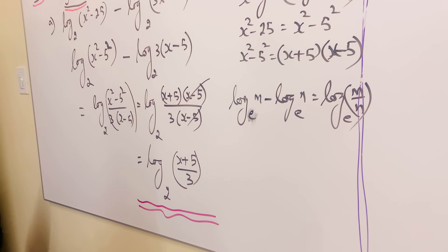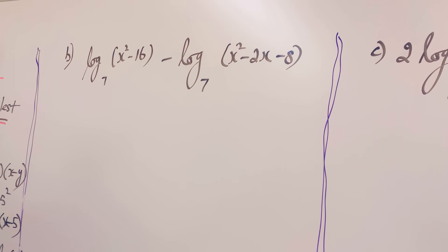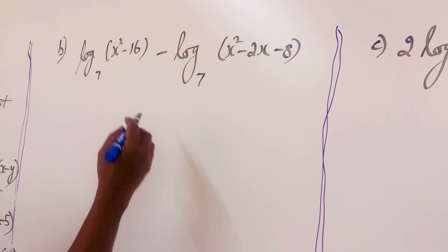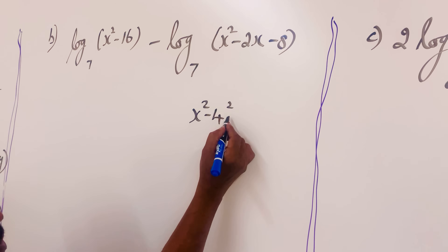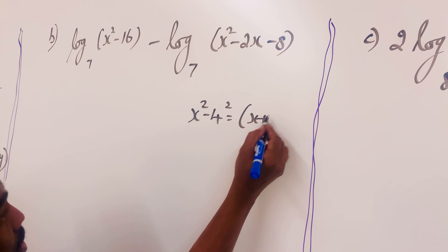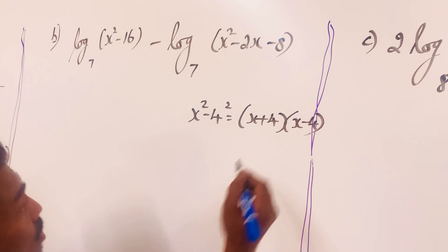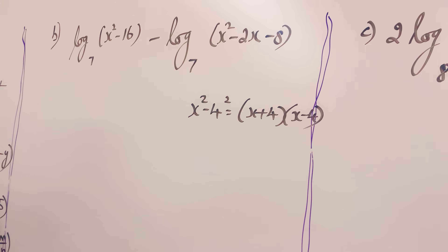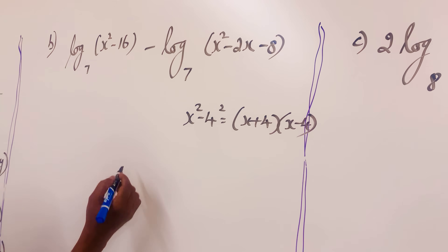Now let us go to question number B. The first part is quite similar to the same difference-of-squares formula, so I don't need to explain too much. x squared minus 16 equals x squared minus 4 squared, which equals x plus 4 times x minus 4. The next part is a quadratic expression that should be factorized — that is important.